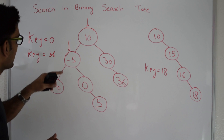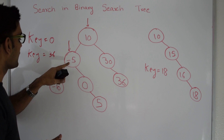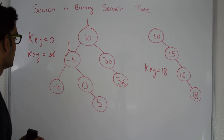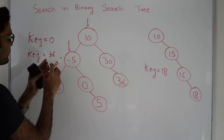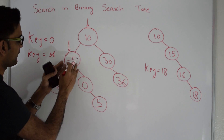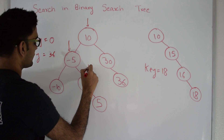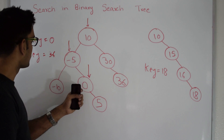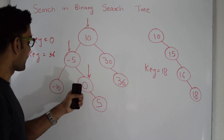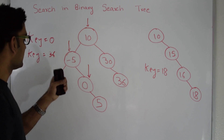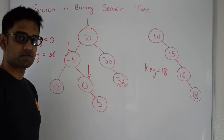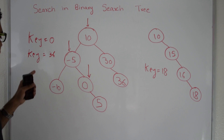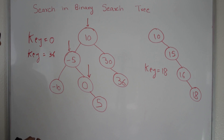Again we check if the node value is same as 0 — it's not. Now 0 is greater than the value here, so we go on the right side since it's a binary search tree. Again we check if the node's value is same as key — this time it is. So we return this particular node. Let's see how we search for key 36.